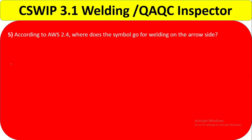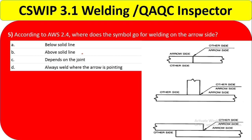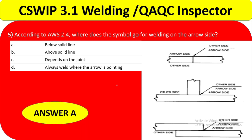Question number 5: according to AWS 2.4, where does the symbol go for welding on the arrow side? Options are: below the solid line, above the solid line, depends on the joint, or always weld where the arrow is pointing. Option D is not right, option C is not right. According to AWS 2.4, the symbol for welding on the arrow side should be below the solid line. So option A is the correct answer.